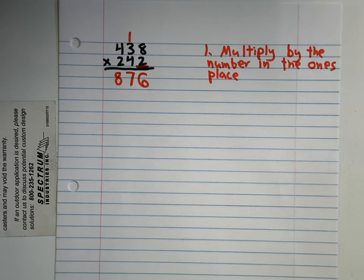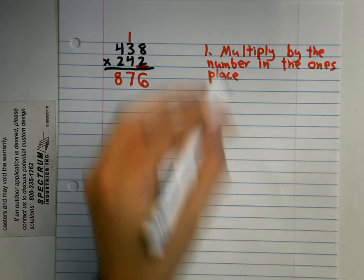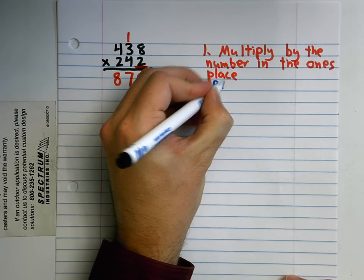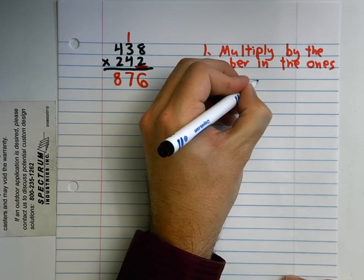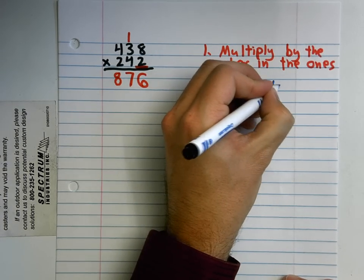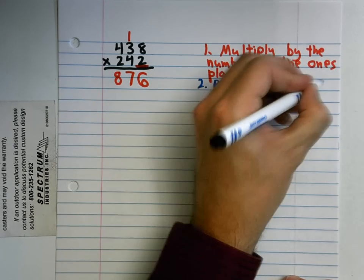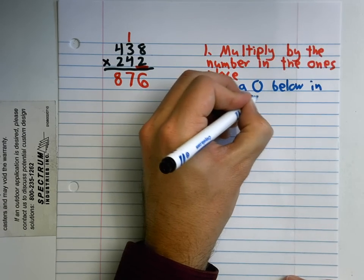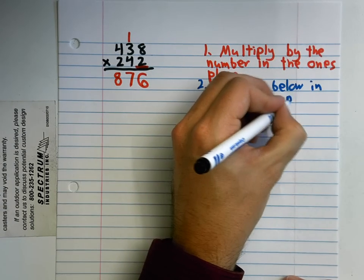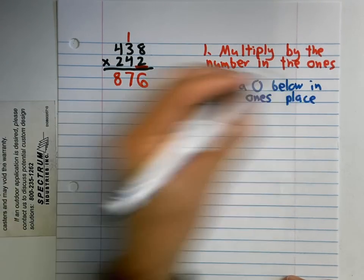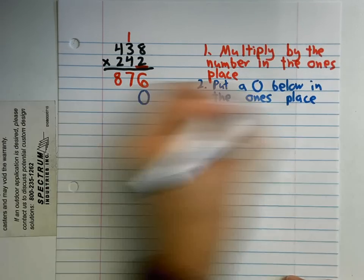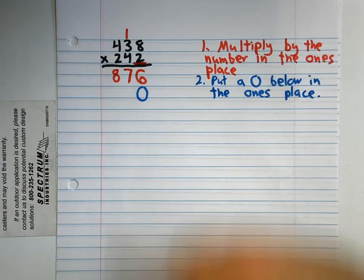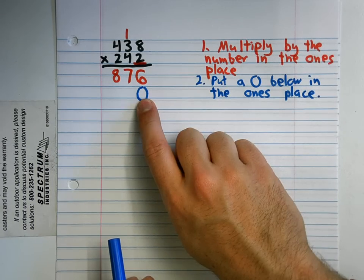Now we have step two. Step two is put a zero below in the ones place—it holds our place. Because now we're going to start multiplying by a number in the tens place, so we don't want anything in the ones.